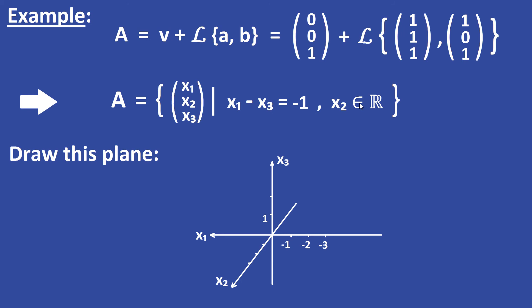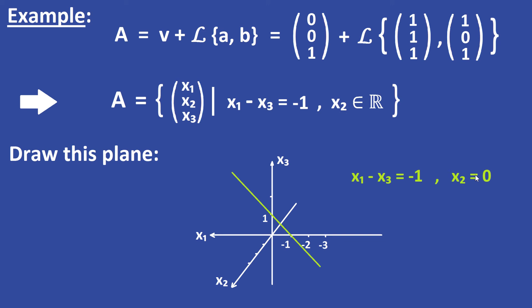Using this equation we can draw this plane. The line X1 minus X3 equals minus 1 for X2 equals 0, and we get the plane by parallel translating this line in the X2 direction.